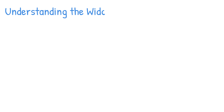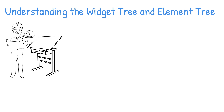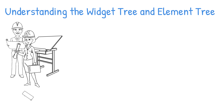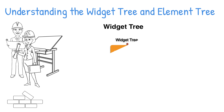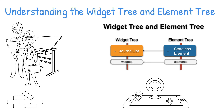In the previous video, you learned that widgets contain the instructions to create the UI. When you compose and nest the widgets together, they create the widget tree. The Flutter framework uses the widgets as the configurations for each element that is mounted and rendered on the screen. The mounted elements displayed on the screen create the element tree. You now have two trees: the widget tree that has the widget configurations, and the element tree that represents the rendered widgets on the screen.